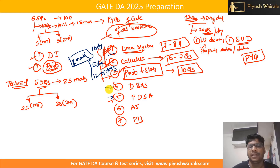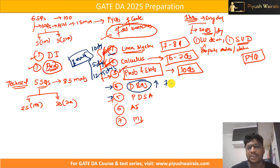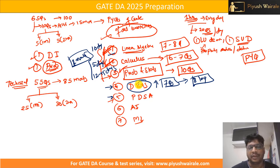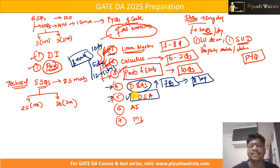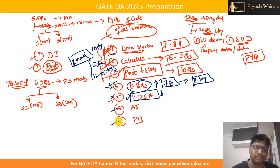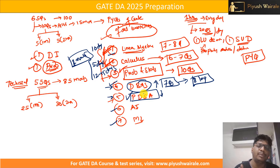For DBMS, if you observe the previous year GATE DA paper, the weightage was less — only seven questions last year — but this time you can expect around eight to nine questions, so DBMS will have higher weightage. For PDSA, last year it had the highest weightage at around 18 marks. This year you can expect a decrease in PDSA weightage, as I think they will increase weightage for DBMS, AI, and ML parts. Last year was the first time the exam was conducted, so this year expect more equal weightage across subjects.